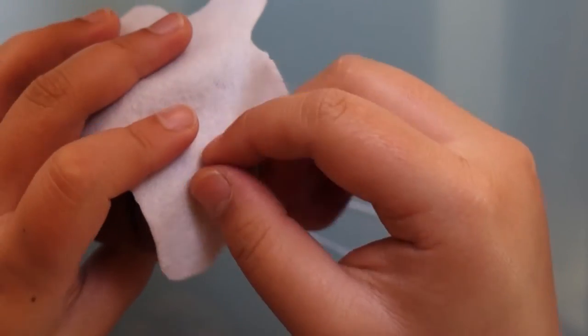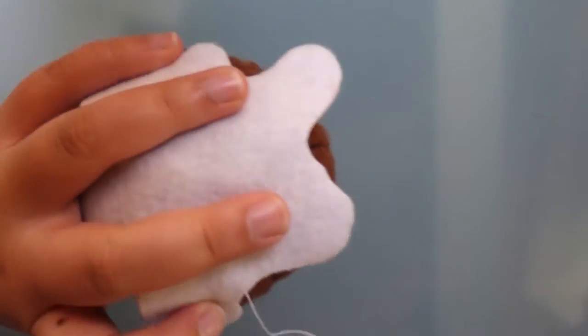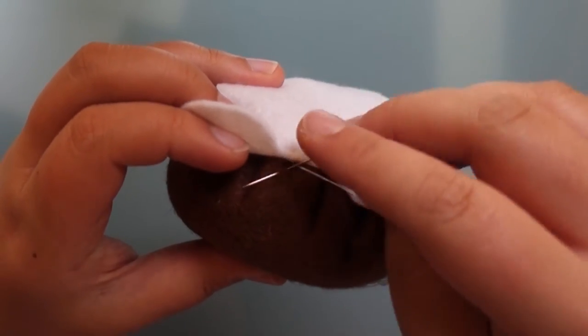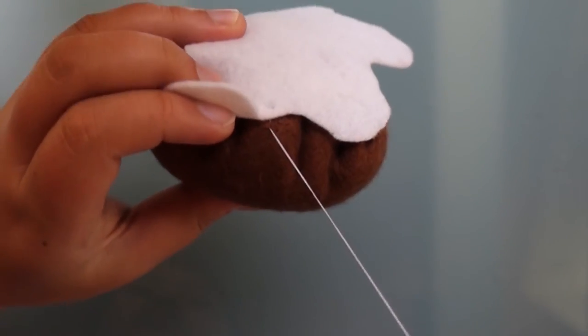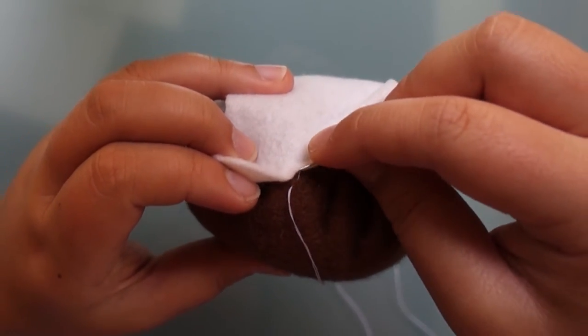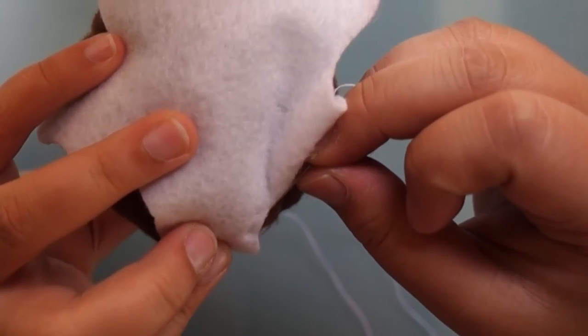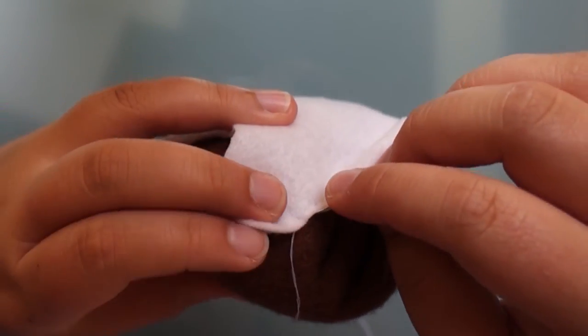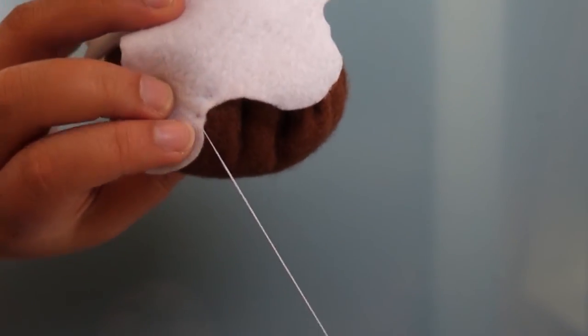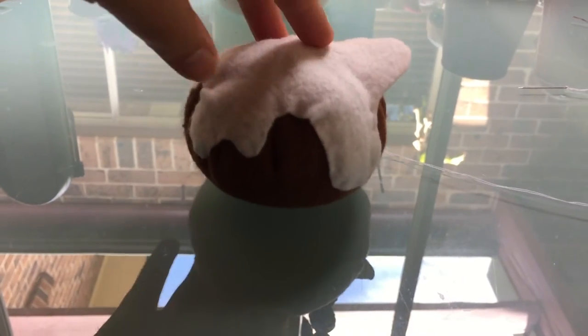Then we want to do a hidden ladder stitch but first you want to tack the icing to the pudding. So just do a little through and through stitch there. Now the hidden ladder stitch you can see in my how to sew video. But what you want to do is place your needle between the layers of the white felt so you don't see the stitching of it on the outside. And then take a nick of brown felt and then a nick of white felt and brown felt and eventually you'll get something that looks like this.